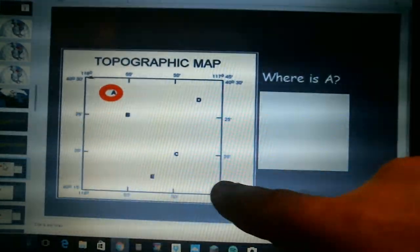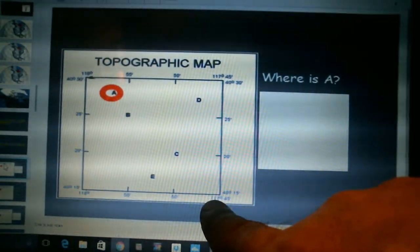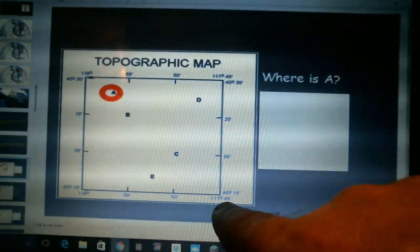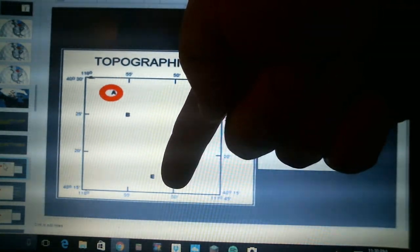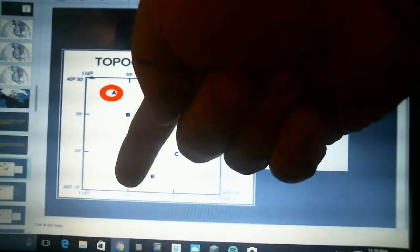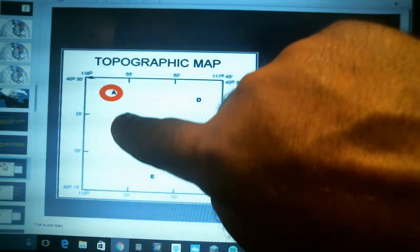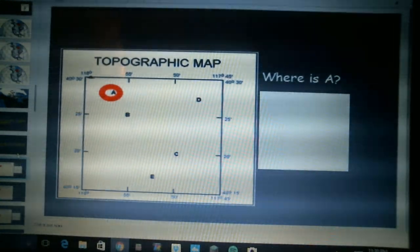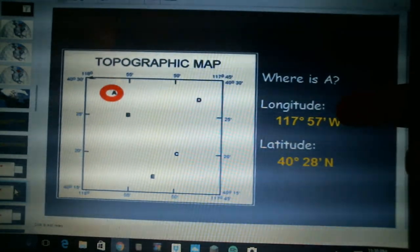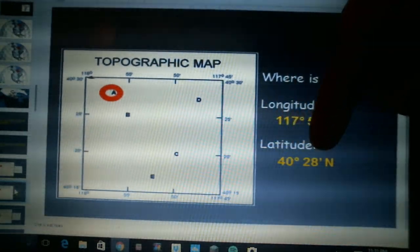Then we're looking at the longitude going back and forth east and west. All of these are going to be in the western hemisphere where we're at. At the bottom right hand corner here it says 117 degrees 45 minutes and then it just simply says 50 degrees as the next dot, so we assume that it's the same 117 degrees but then 50 minutes, and then we have 55 minutes. So that would be 117 degrees 55 minutes west, and then the next degree mark which is 118. Well this letter A here is a little bit more than the 55 so I'm going to guess 57 minutes. So the longitude is 117 degrees 57 minutes west, the latitude is 40 degrees 28 minutes north.